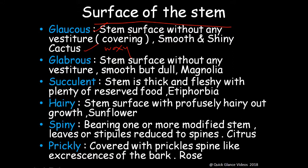Glabrous stems have a surface without any covering — smooth but dull — example: magnolia. Succulent stems are thick and fleshy with plenty of reserve food — example: Euphorbia. Hairy stems have a surface with profuse hair-like outgrowths, as seen in sunflower. Spiny stems bear one or more modified stem leaves or stipules reduced to spines — like citrus. Prickly stems are covered with spine-like extensions of the bark — as in rose, where the epidermal part converts into small prickles that help the plant cling to surfaces.